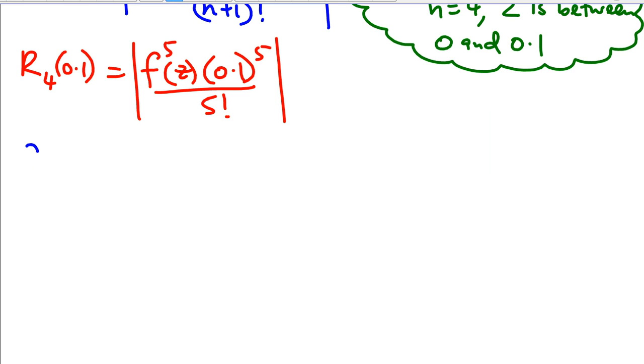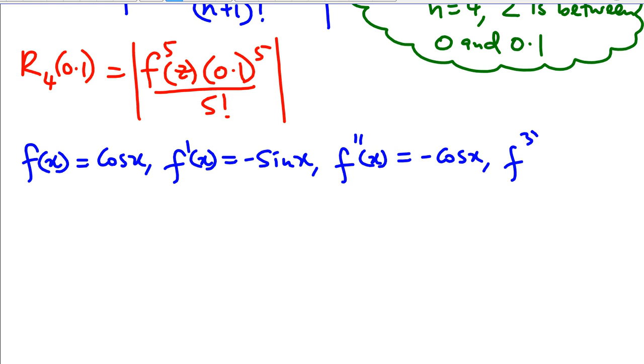So F of x is equal to cos x. F dash x will be equal to negative sin x. Second derivative of this function will be equal to negative cos x. Third derivative of this function will be equal to sin x. Fourth derivative of this function will be equal to cos x. And the fifth derivative of this function will be equal to negative sin x.